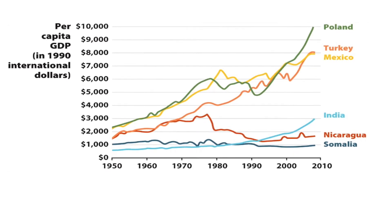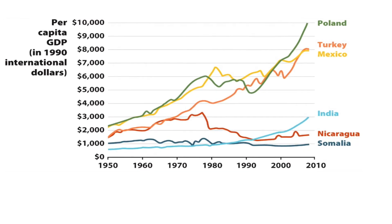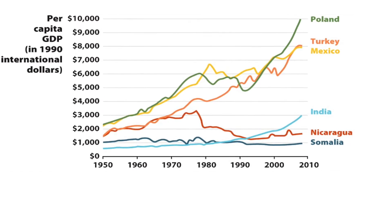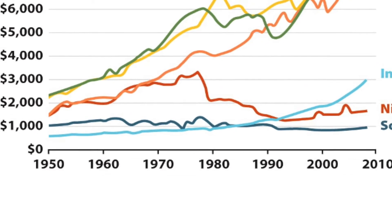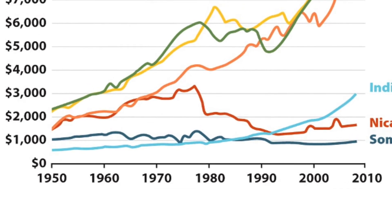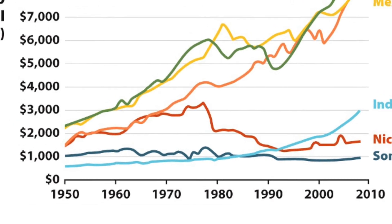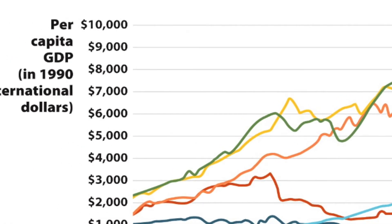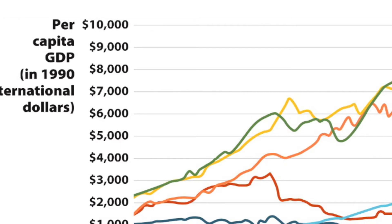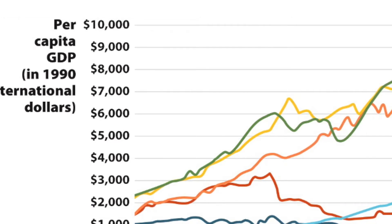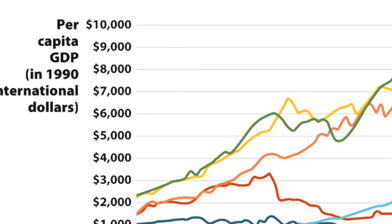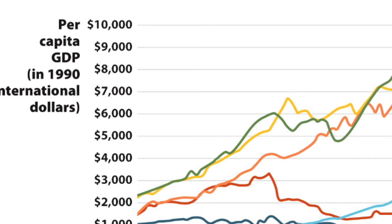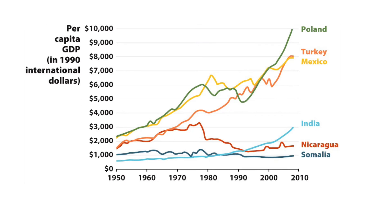This graph allows us to estimate living standards across time and nations. On the x-axis we have time, specifically the period between 1950 and 2010. On the y-axis we have per capita GDP in 1990 dollars — think of it as the average annual income per person. The graph presents six different countries that had roughly the same income per person in 1950.